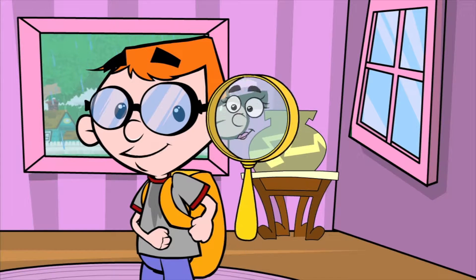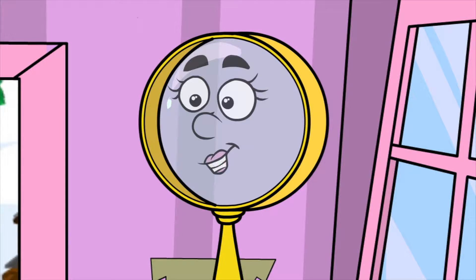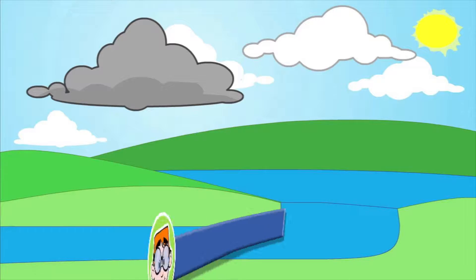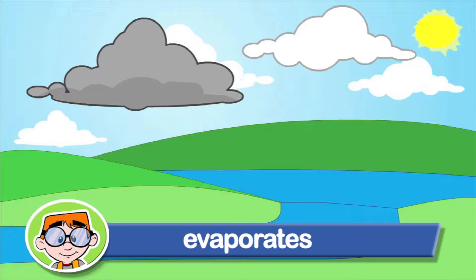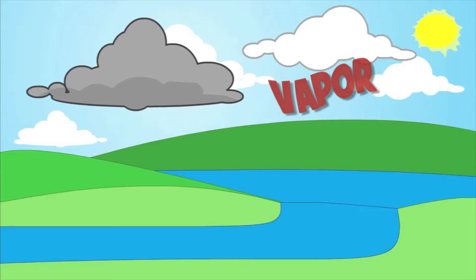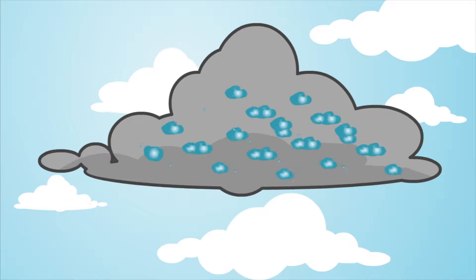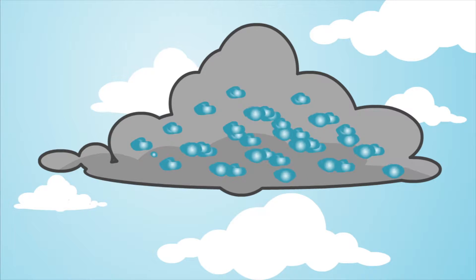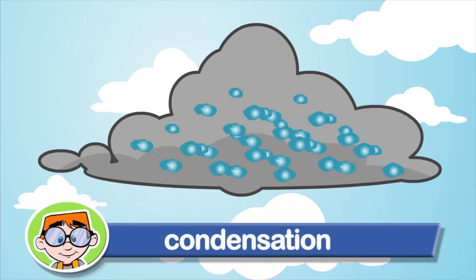The water cycle? What's that? Here's how the water cycle works. The sun heats a body of water, like the ocean. The water evaporates, or turns into steam or vapor, and then travels up into the sky. Then the water vapors become cooler and come together, collecting in clouds.